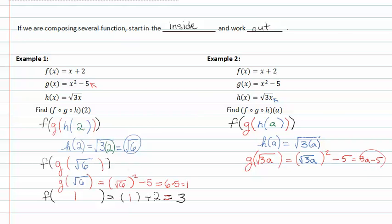Now that we know what g of root three a is, we can substitute it into the original f of x, the outmost function. Since f of x is x plus two, we'll put a space where the x was and substitute three a minus five in its place. When we simplify this, we get three a minus five plus two, which gives us three a minus three.